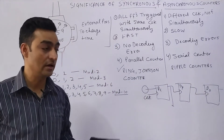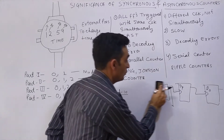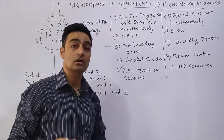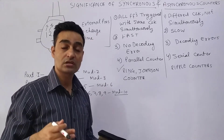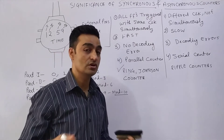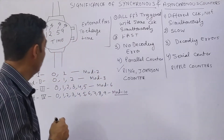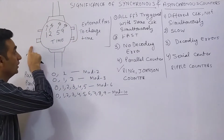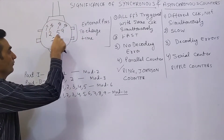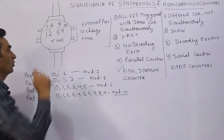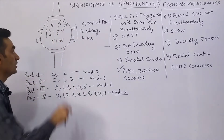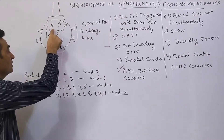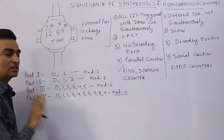Now let us try to understand whether the synchronous counter or the asynchronous counter has more applications in real life. Let us take an example of a digital watch. There are external pins to the digital watch, and internally the time displayed by the digital clock is 12:59. I have divided this time display into four parts.